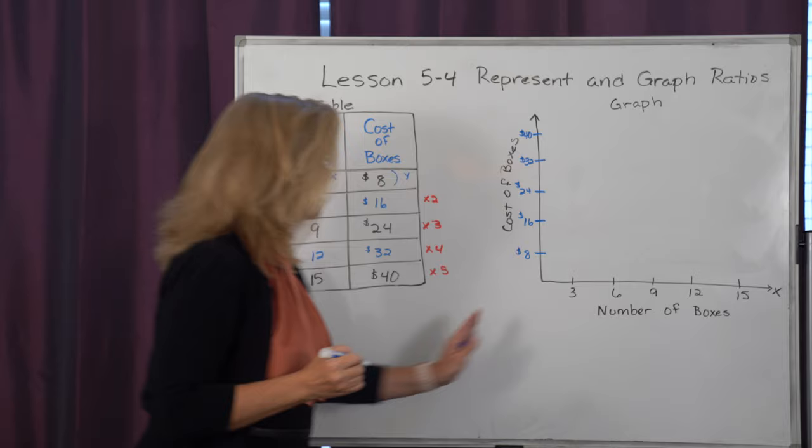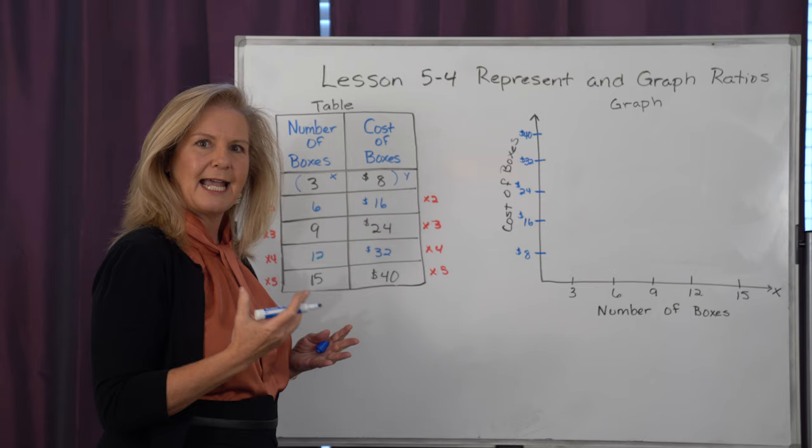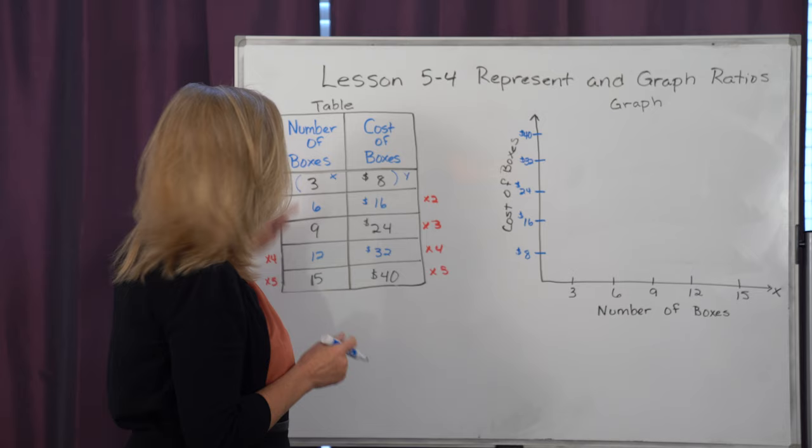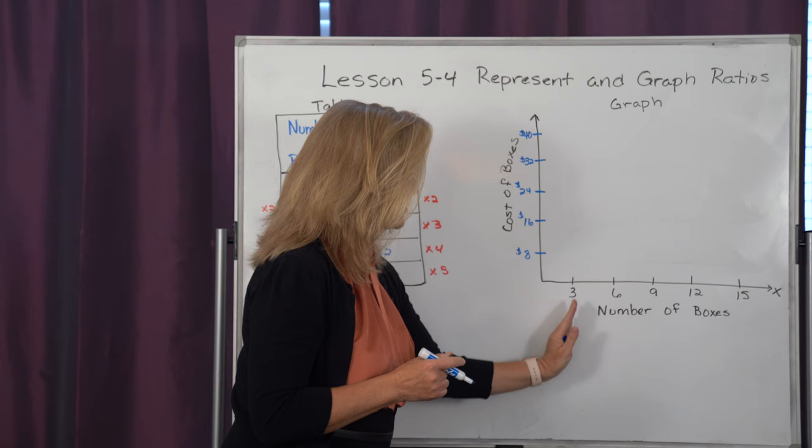And what I can do is use that as an ordered pair to find a location on the graph and graph it. So if I see this ordered pair of 3, 8, I start on my x, which is 3, and I go up to where it is 8, and I'm going to put a point right there.